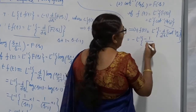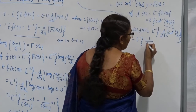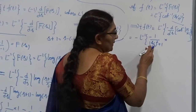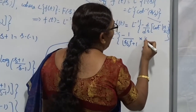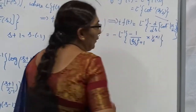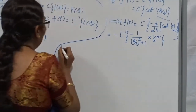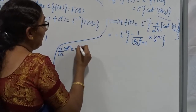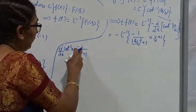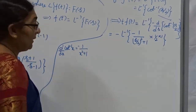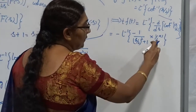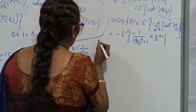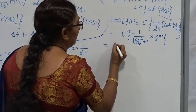The derivative of cot⁻¹(s/2) is −1/((s/2)²+1) times 1/2. Repeating: derivative of cot⁻¹(x) is −1/(x²+1) times derivative of x. Here instead of x we have s/2, so derivative of s/2 is 1/2. Taking the minus sign outside: minus times −1/((s/2)²+1) times 1/2. Now simplifying: (s/2)² = s²/4, so the denominator becomes s²/4 + 1.